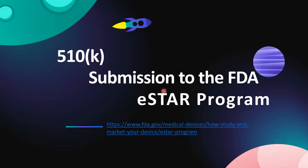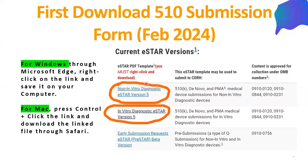The 510-K submission is through the eStar program, described by the FDA as an interactive PDF form that guides applicants through the process of preparing a comprehensive medical device submission. You can download the latest version of the eStar PDF document from the website given in the comments section. For Windows through Microsoft Edge, right-click on the link and save it on your computer. For Mac, press Control and click the link, then download the file through Safari. In this presentation, we are describing version 5 of the eStar, and there are two types: non-in-vitro diagnostic eStar and in-vitro diagnostic eStar.